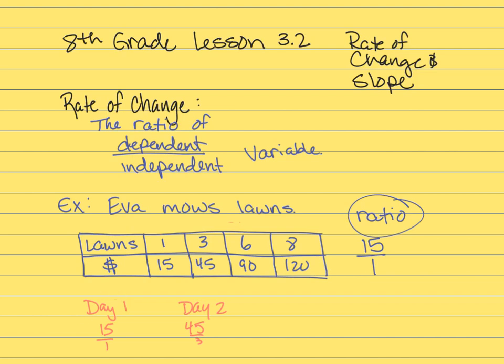For example, if we looked at this day one here and she had a 15 to 1 ratio, we know she's making $15 for every one lawn that she mows. But let's say we didn't know that. We found out that she had $45 made for mowing three lawns and she was paid the same amount for each lawn.